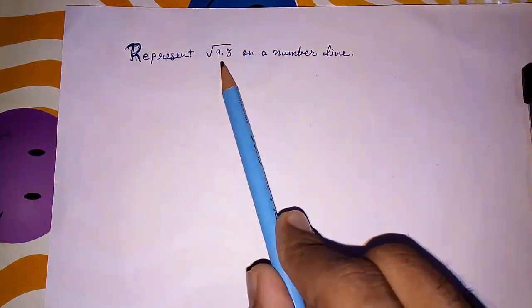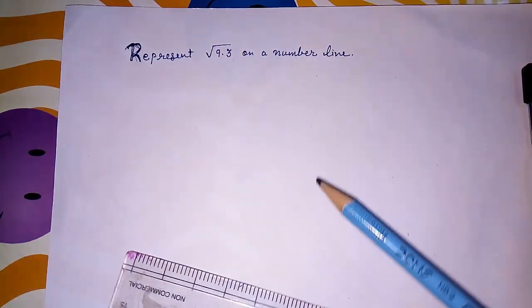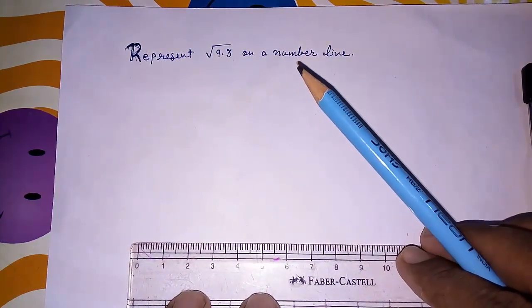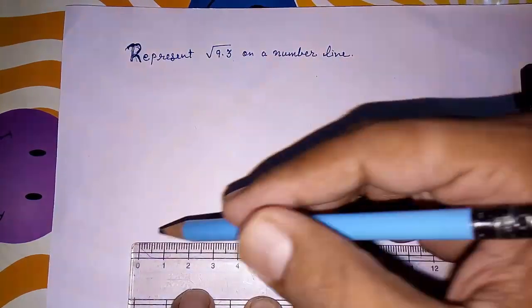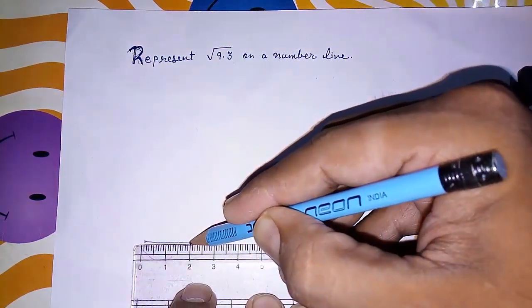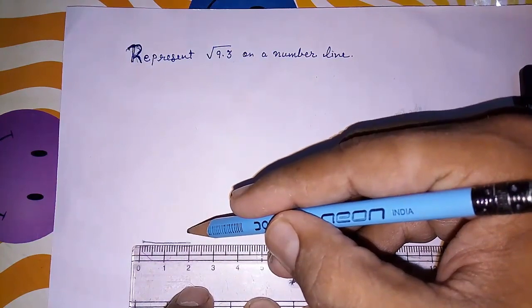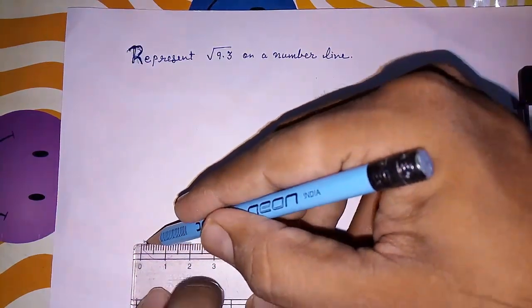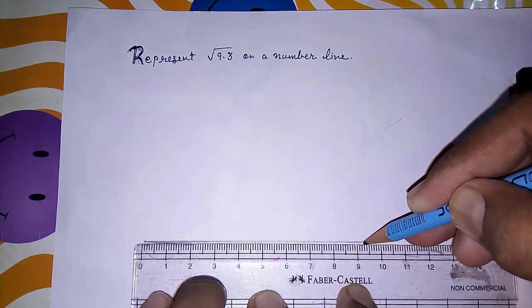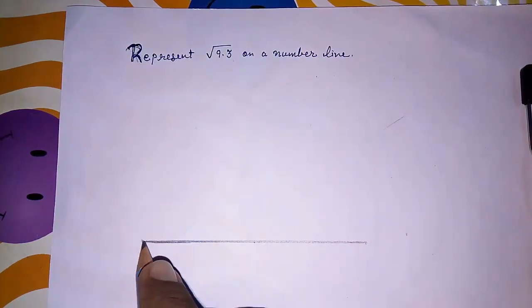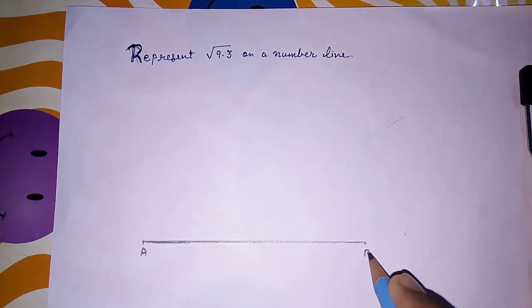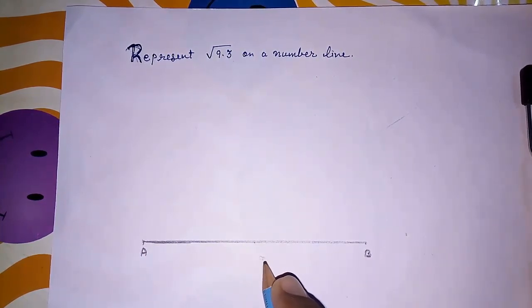What we have to do? First we are having 9.3, so we are going to draw a line measuring 9.3 cm from A to 9.3 cm. And we will give this point's name A and B. This is 9.3.